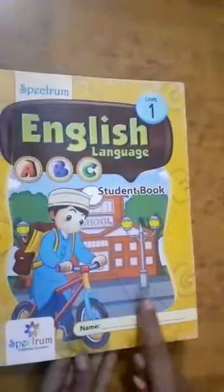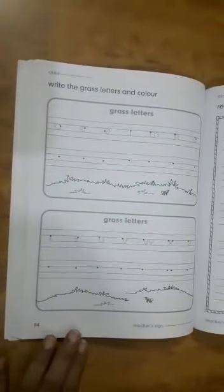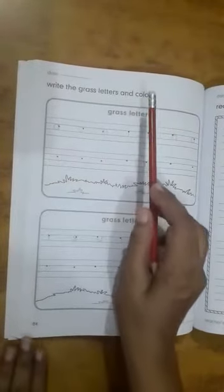For more practice, open your student book. English student book. Page number 84. Yes. Write the grass letters and colour.